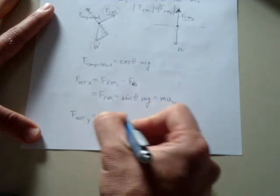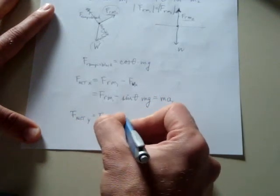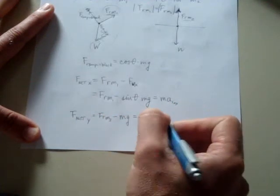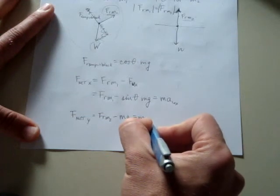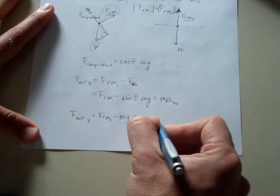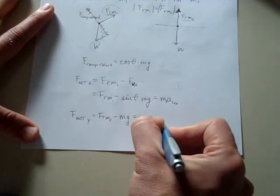Minus the weight, which is mass times gravity, is going to be equal to mass 2 times the acceleration of 2. Okay.